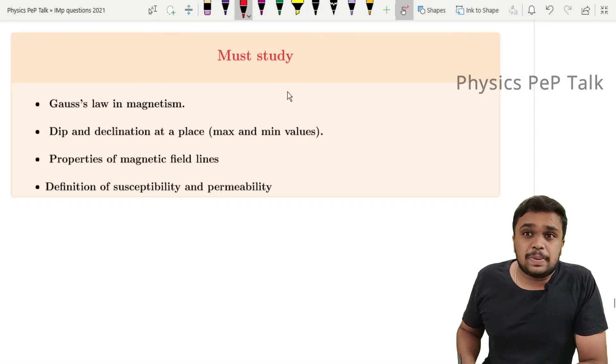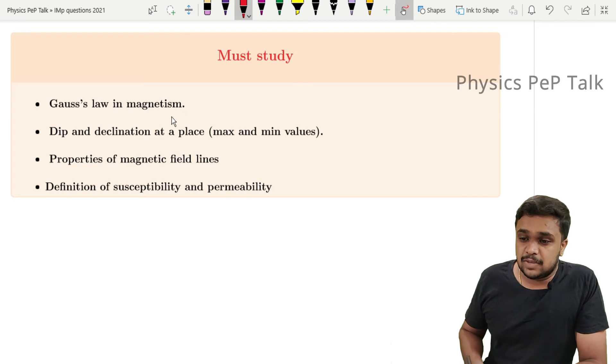Must-study topics from this chapter include Gauss's law in magnetism and dip and declination at a place.